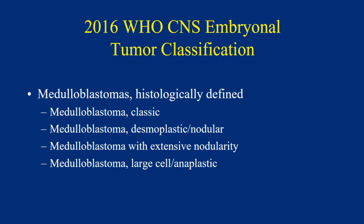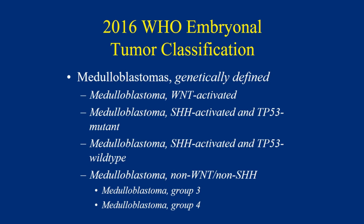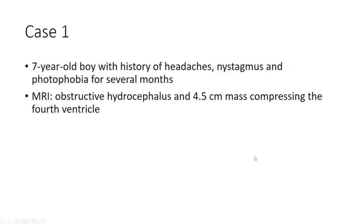This is the 2016 WHO classification of medulloblastoma. There are two approaches: histologically defined categories, which have been with us for a long time — classic, desmoplastic nodular, medulloblastoma with extensive nodularity, and large cell anaplastic (the latter associated with bad outcome). Then there are genetically defined categories, a new addition in 2016, incorporating genetic findings: Wnt-activated, Sonic Hedgehog, and non-Wnt/non-Sonic Hedgehog groups. With that, we'll start with the cases.